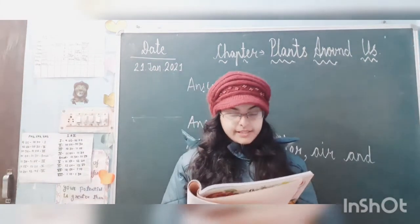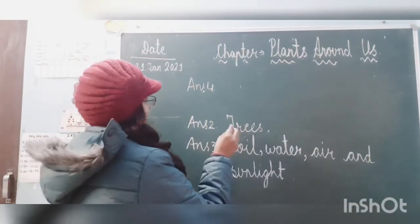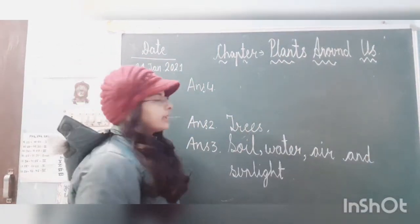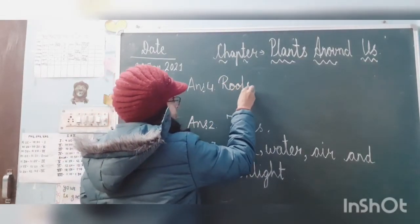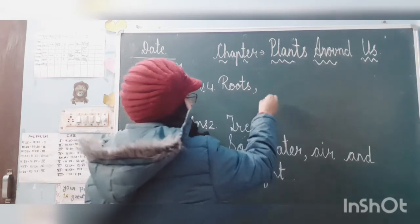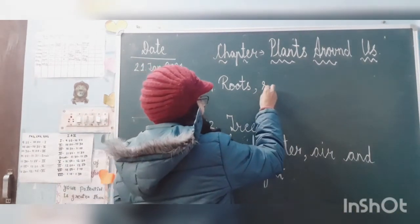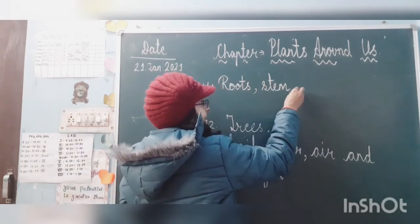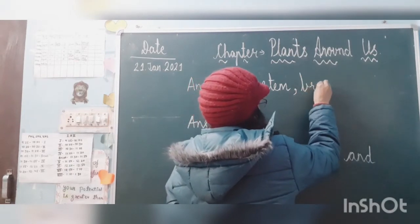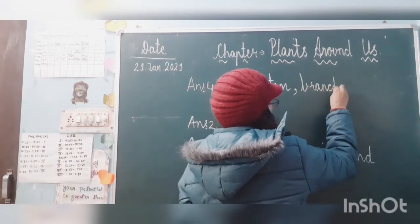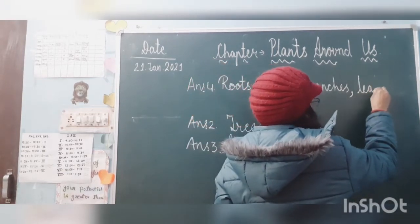Question number 4: name the parts of a plant. You know it very well. Let's start from underground. Underground it's the root — R-O-O-T-S. Then stem. Stem has branches. Write down: branches — B-R-A-N-C-H-E-S. And from branches we have leaves.